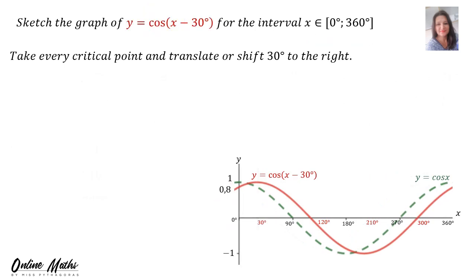Let's look at another cos graph. Sketch the graph of Y is equal to cos(X minus 30) for the interval 0 up to 360 degrees. We will take every critical point and translate or shift 30 degrees to the right. On the sketch, the green graph is Y = cos X, the original cos graph, and the red one is the one shifted to the right. New critical points: 0 plus 30 is 30 degrees. It's very clear that my graph starts at 30 and 1.